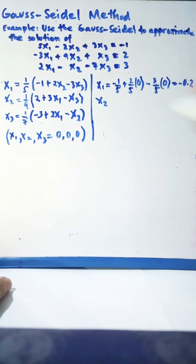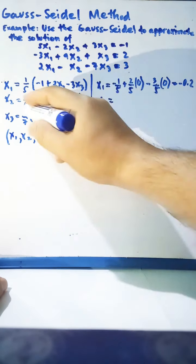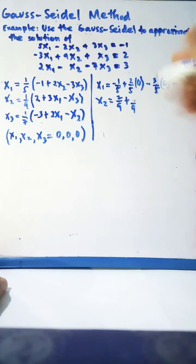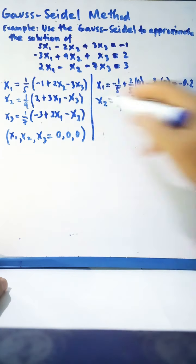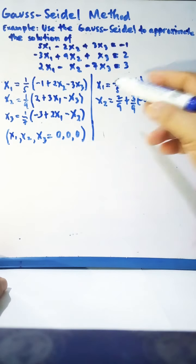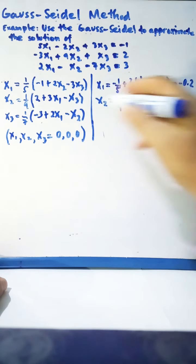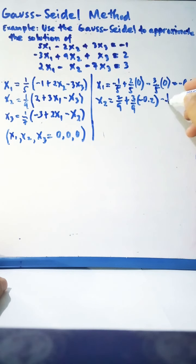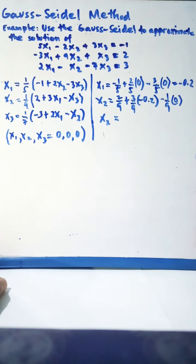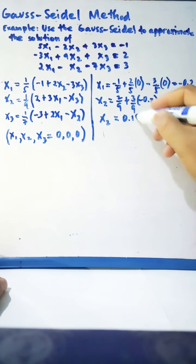For x₂ in Gauss-Seidel, instead of using 0 for x₁, we now use the updated value x₁ = -0.2. So x₂ = (1/9)(2 + 3(-0.2) - (0)) = 0.156. We use 0 for x₃ because we have not yet found its updated value.